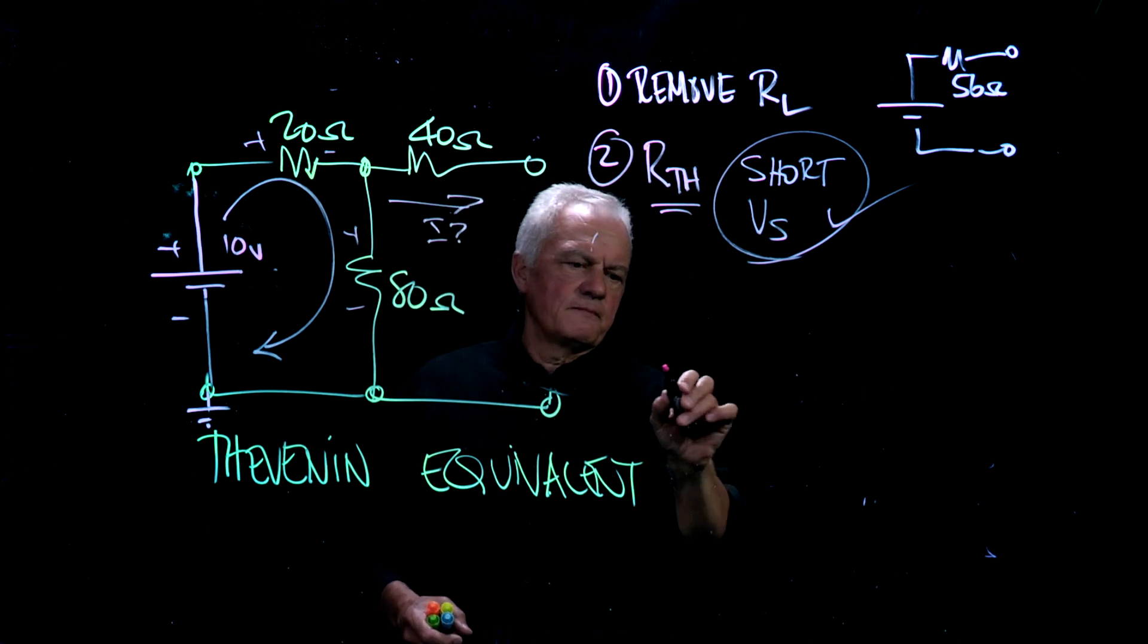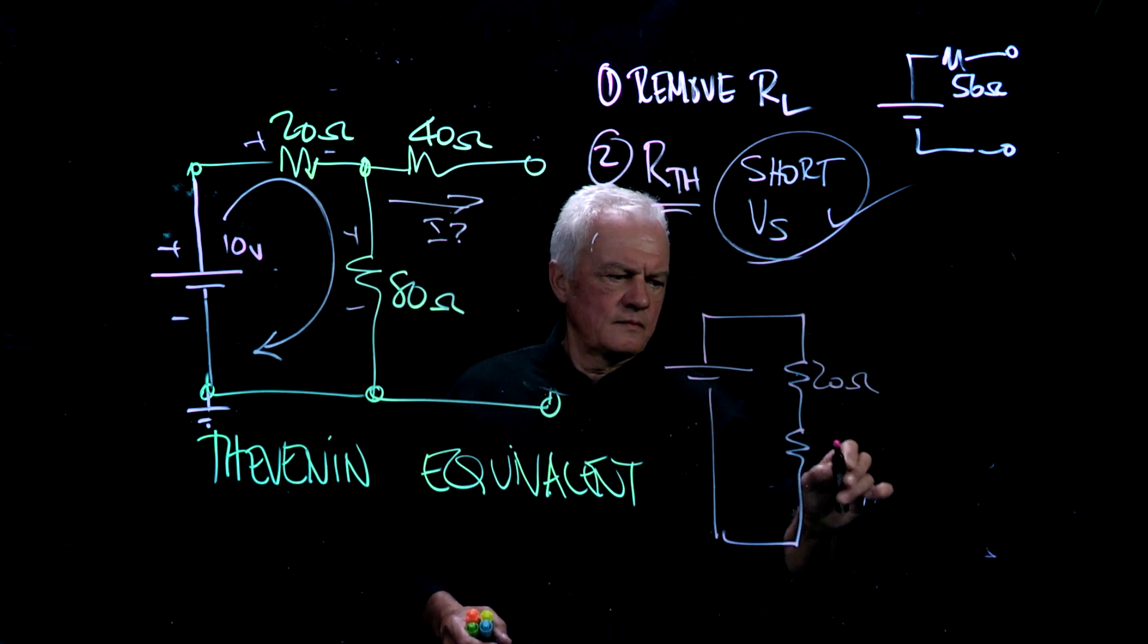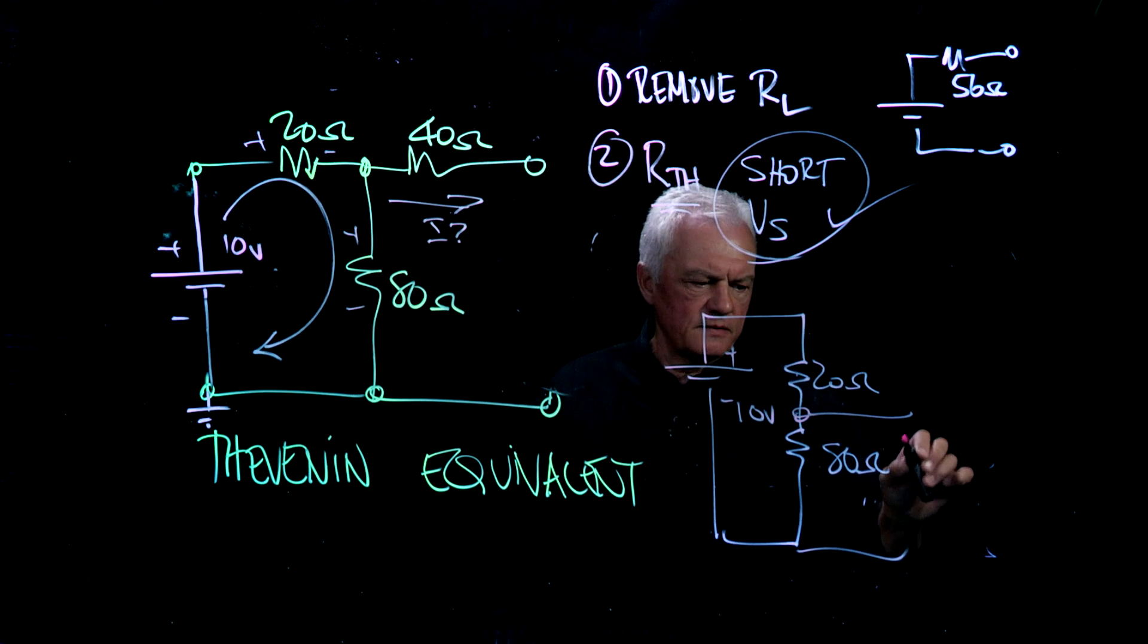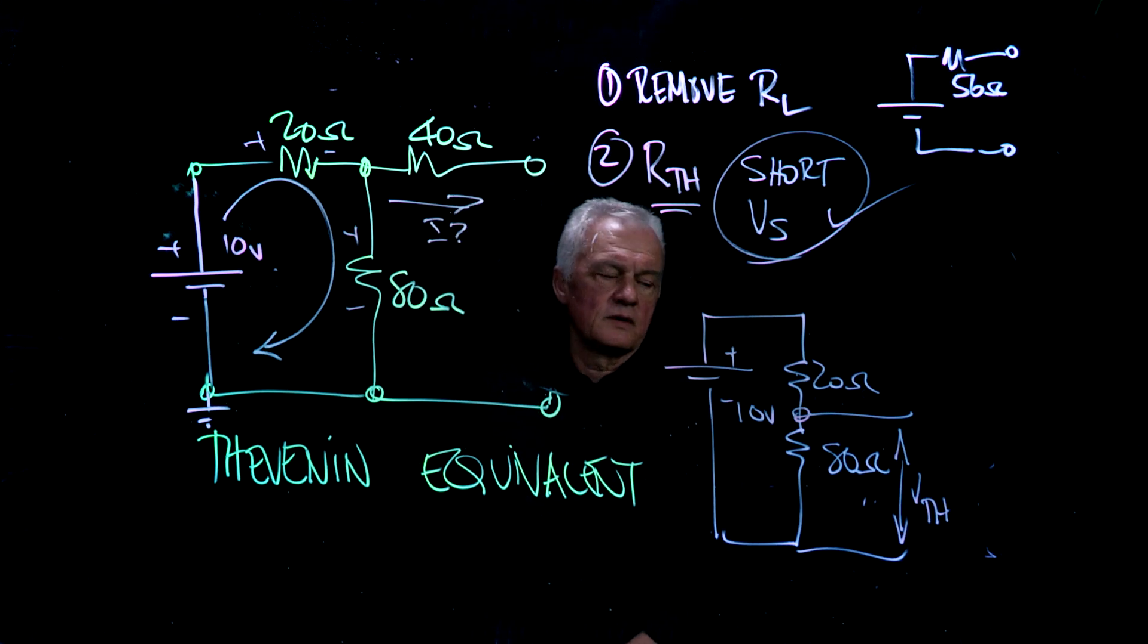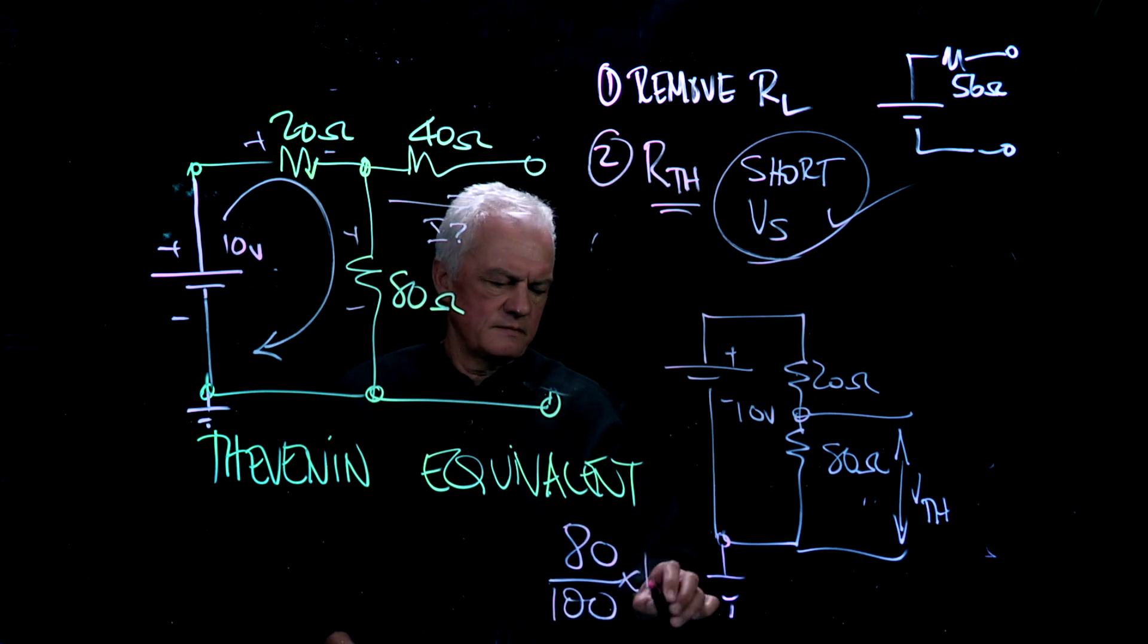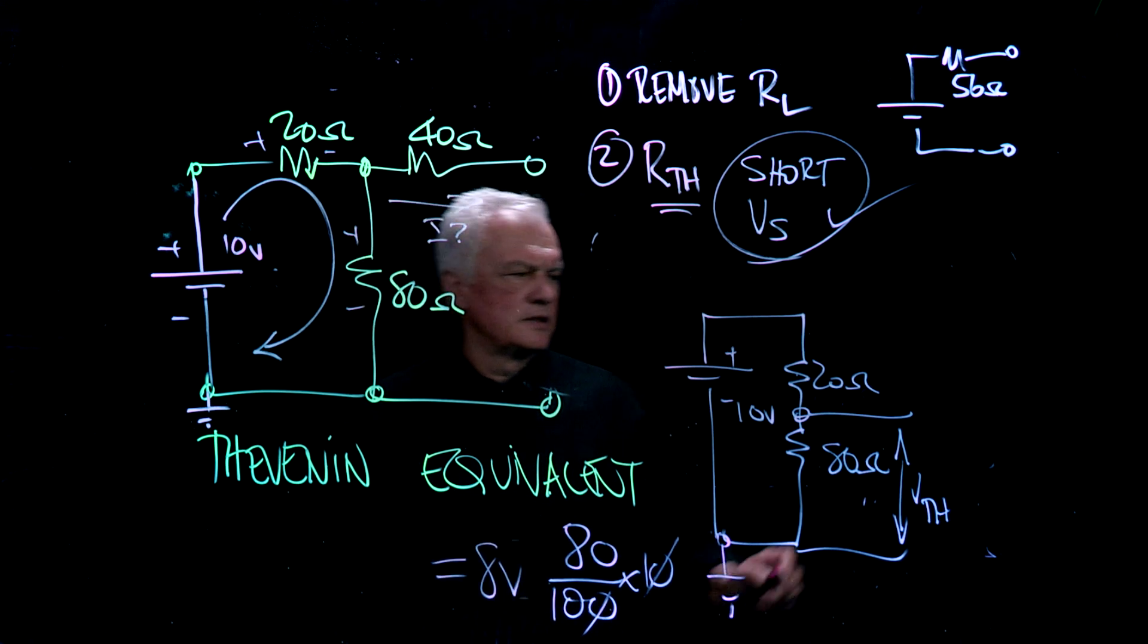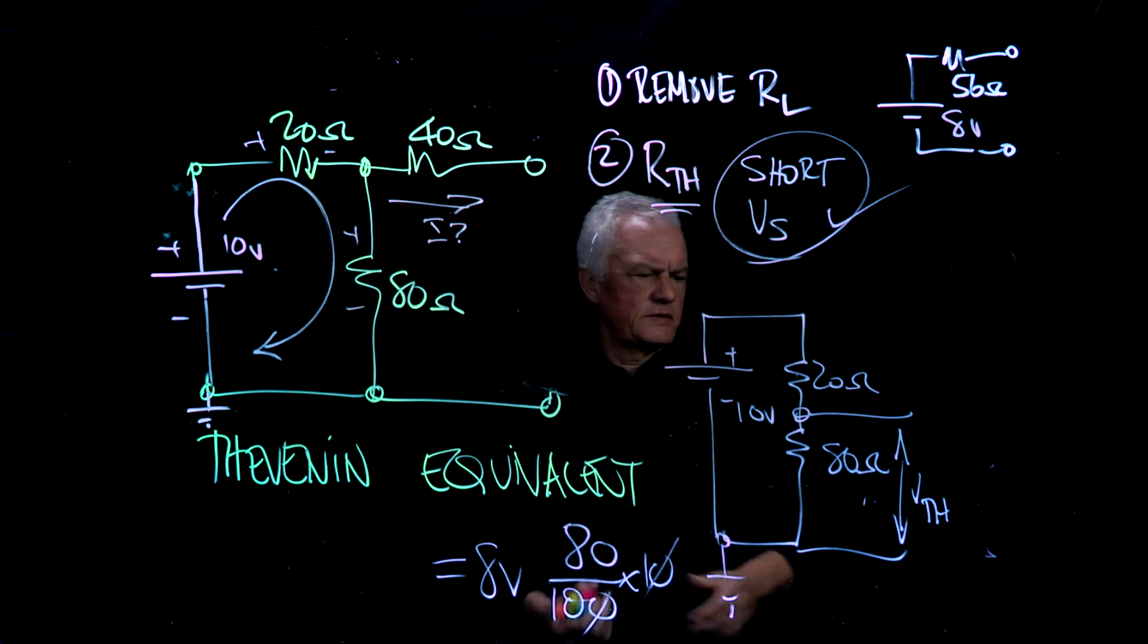That means that I'll be looking at a circuit that looks like that. What I want to know is, what is this voltage here? That would be the voltage that we see for Thevenin. So, let's go back to the voltage divider rule, just real quick to make the math simple. I will have 80 over 80 plus 20 times 10. So I will see 8 volts. So, my Thevenin equivalent circuit is going to be 8 volts and 56 ohms.